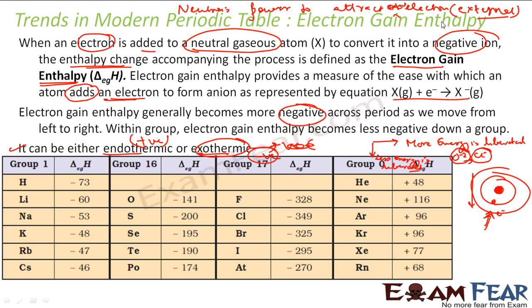This is essentially about the nucleus's power to attract external electrons. Moving across the same period, the atomic size decreases and the nuclear charge increases, so the nucleus has more power to attract electrons and the energy liberated increases — meaning electron gain enthalpy becomes more negative. Going down the group, nuclear power decreases due to increasing atomic size and shielding effect.